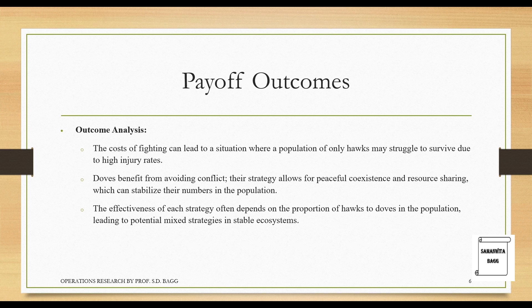Payoff outcomes analysis: the cost of fighting can lead to a situation where a population of only Hawks may struggle to survive due to high injury rates. Doves benefit from avoiding conflict — their strategy allows for peaceful coexistence and resource sharing, which can stabilize population numbers. If individuals behave aggressively, the cost of fighting leads to many injuries. If they take the Dove strategy, they avoid conflict, get some resources, and share them peacefully.